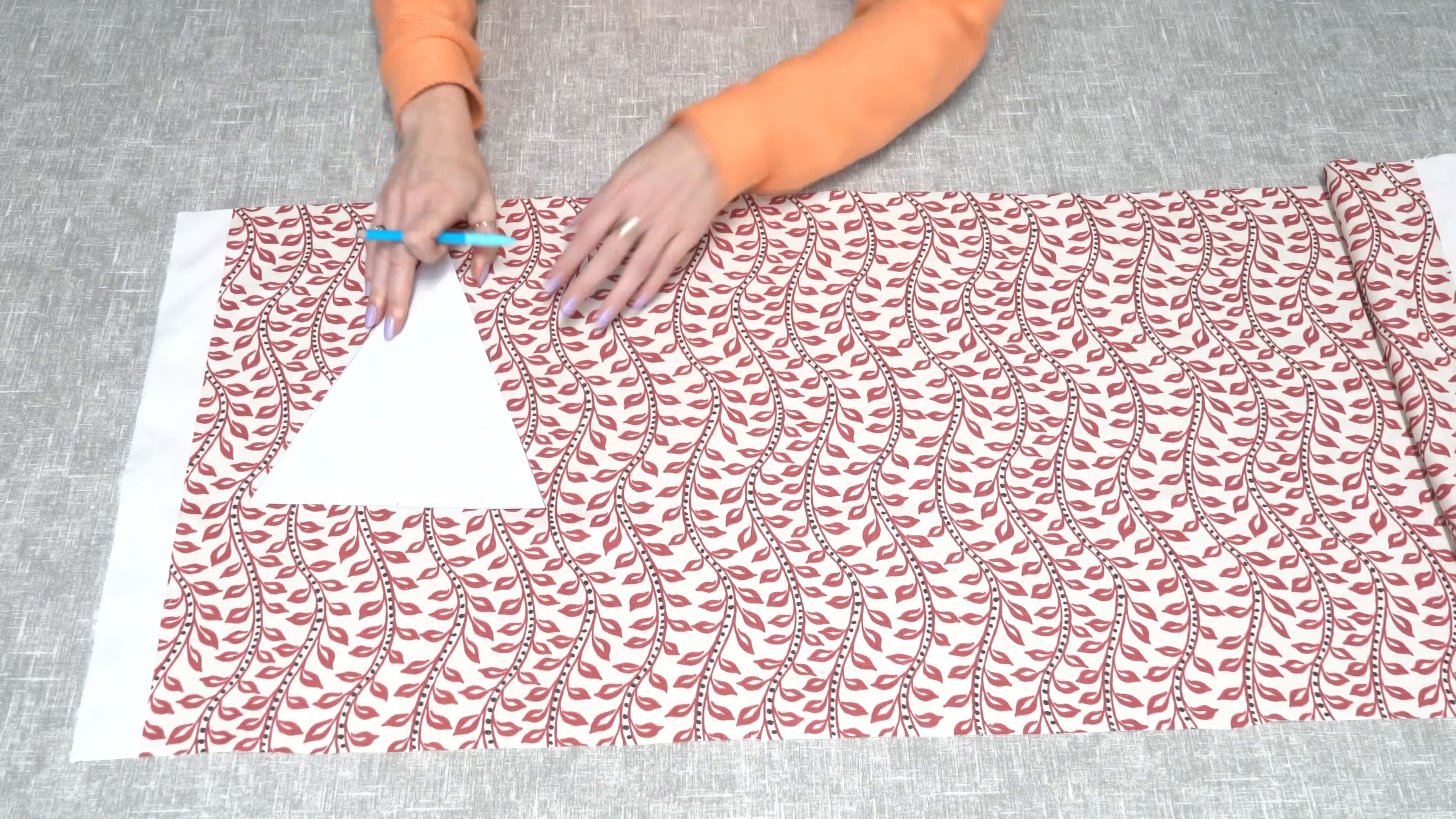So the next step will be to create your triangles. We're going to do double-sided triangles so that the bunting looks nice from both sides.